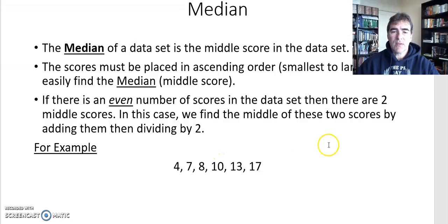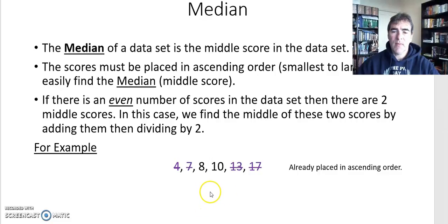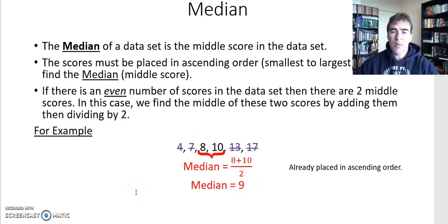Let's look at an example. We have six numbers here, so we've got an even number in our data set, and you'll notice they're already placed in ascending order. If they're not, we have to do that first — smallest through to largest. We cross off the smallest and largest, repeat the process with the next smallest and largest, until we have two middle scores left. We add them together and divide by 2: 8 plus 10 is 18, divide by 2, and our median is 9. You can do that on your calculator using the fraction template.